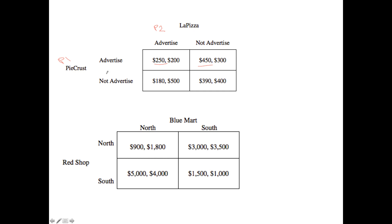Now repeat this technique with LaPizza, player two. Let's assume that PieCrust is definitely going to advertise — cover the bottom two boxes and consider the payoffs on the top end of the matrix. LaPizza would not advertise because the payoff would be $300 versus $200. Now if PieCrust were to definitely not advertise, LaPizza can either advertise for $500 or not advertise for $400 — clearly they choose advertise.